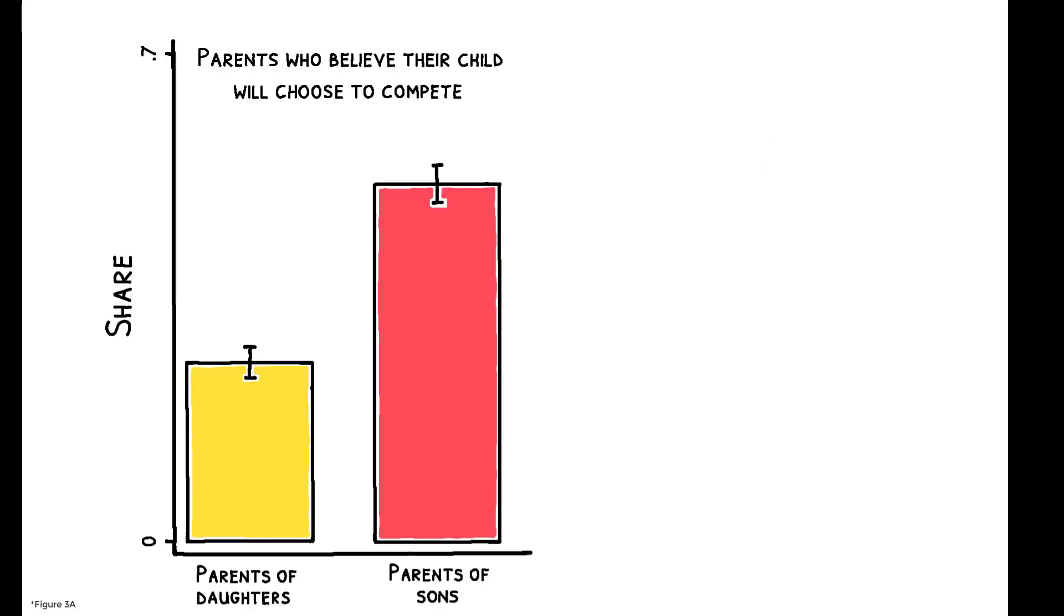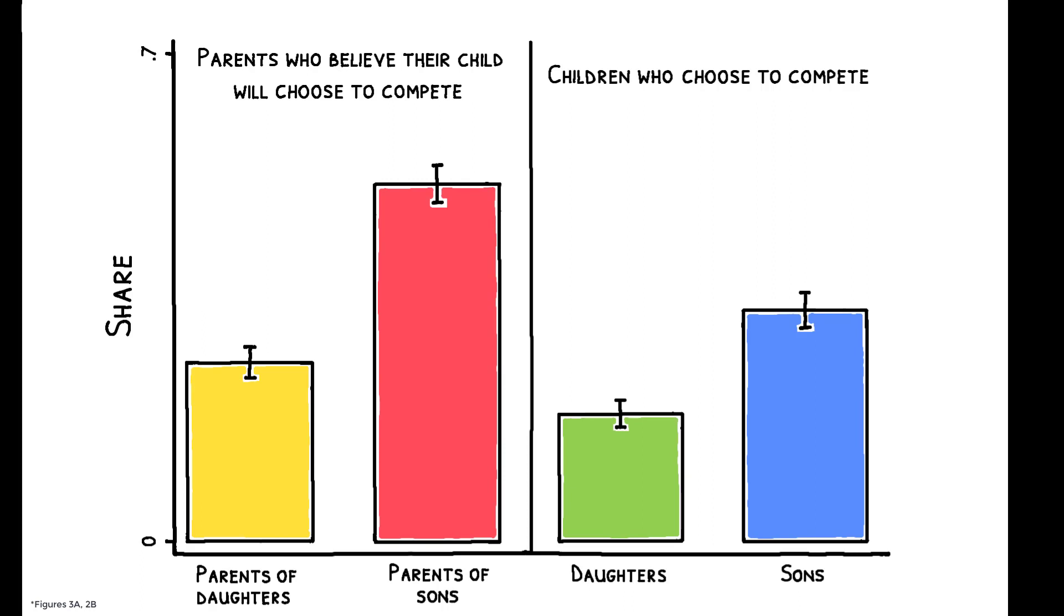This figure shows that the former has a substantial gender component. Parents of sons are much more likely to believe their child will choose to compete. In fact, comparing these beliefs to children's actual choices shows that parents overstate the gender gap in competitiveness.